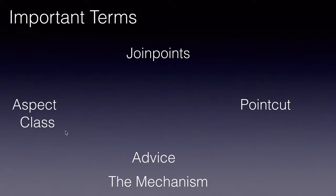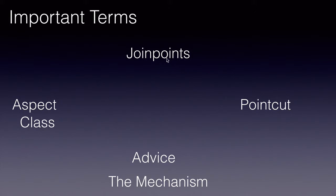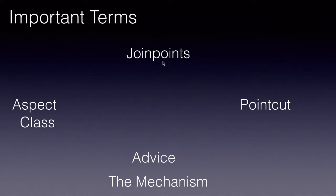Once we develop an aspect and a lot of methods in it, we need to apply those methods to the other classes and their methods in our Java application. That is where join points come in. These are the points where these advices should be applied — this could be a method, a field, or a constructor.